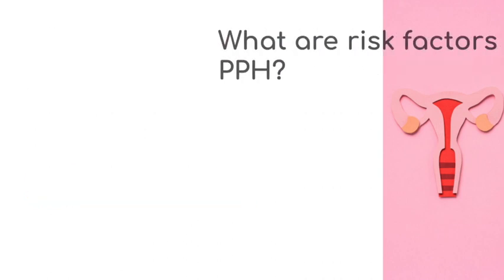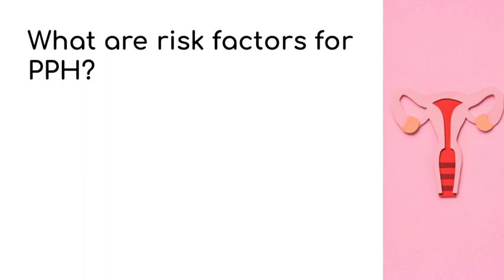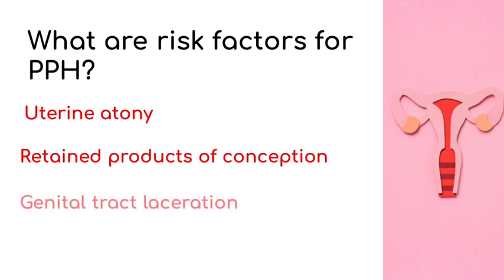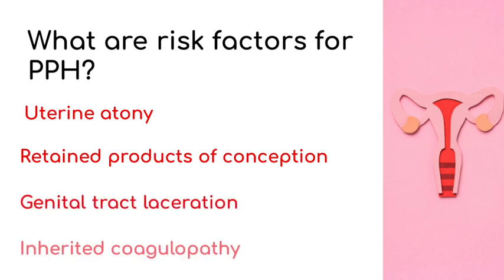What are risk factors for postpartum hemorrhage? The greatest risk factor for PPH is uterine atony. For uterine atony, the most common causes include uterine overdistension such as fetal macrosomia, polyhydramnios, and multiples. Other causes include prolonged labor and chorioamnionitis. Other risk factors for PPH are retained products of conception, genital tract laceration, and an inherited coagulopathy.